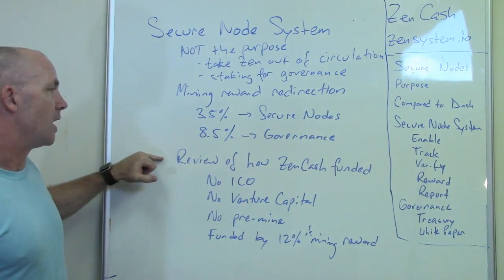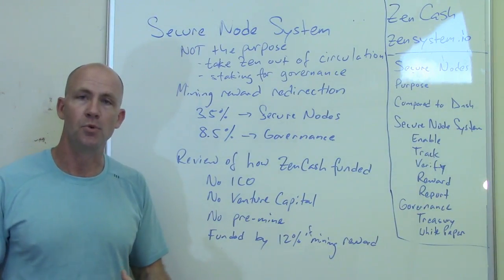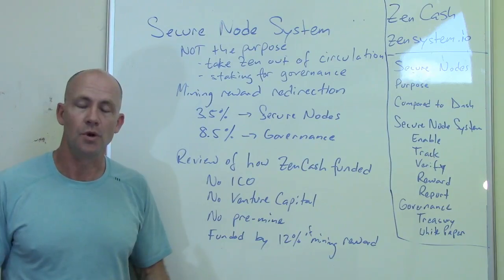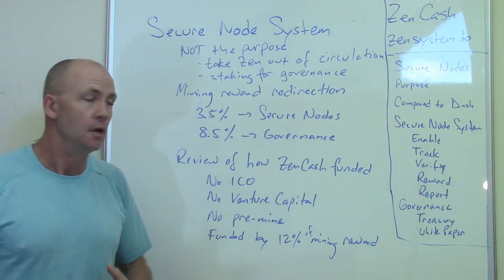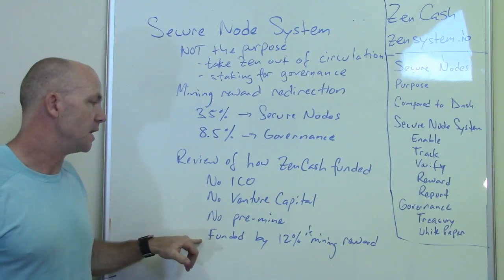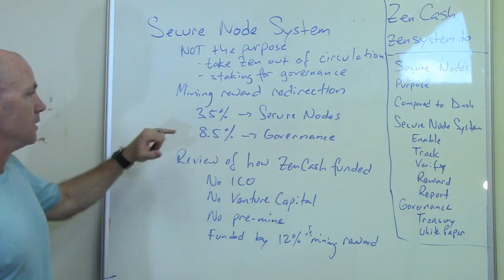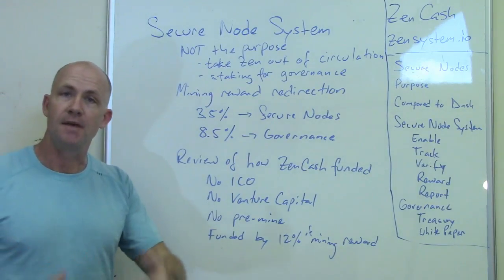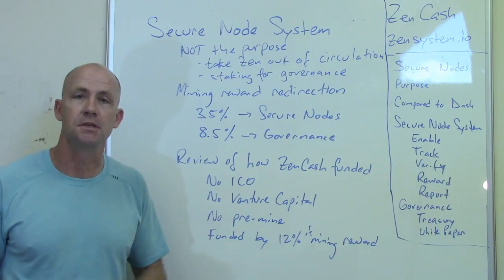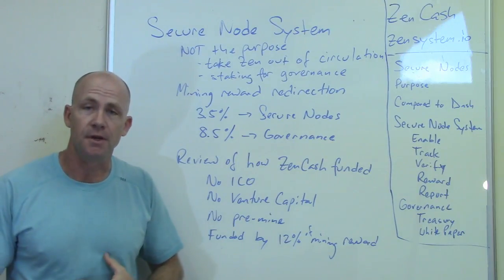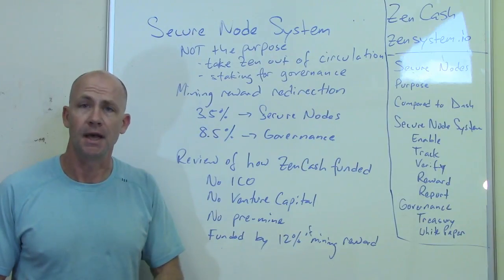Let's review how ZenCash was funded. We didn't start out with a large pool of money through an initial coin offering. We didn't do a pre-mine. We're not venture capital funded. We're funded by the 12% mining reward redirection. We're using these governance funds to pay for the ZenCash secure node system, the implementation of governance, and other things like hardware wallets.